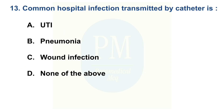Common hospital infection transmitted by catheter is — Option A: UTI. Option B: pneumonia. Option C: wound infection. Option D: none of them. The correct option is Option A: UTI.